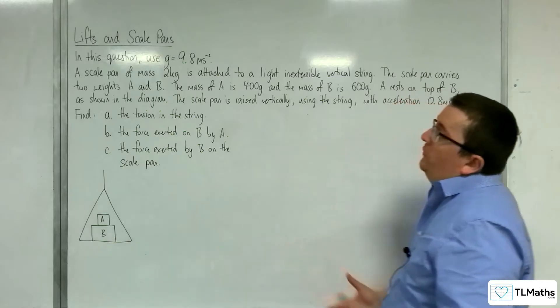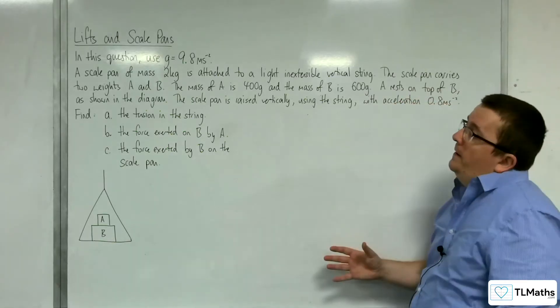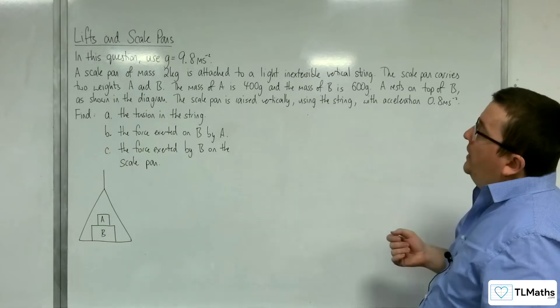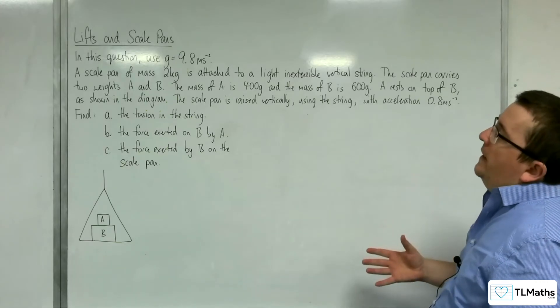In this question, we've got to use g equals 9.8 metres per second per second. A scale pan of mass 2 kilos is attached to a light, inextensible vertical string.